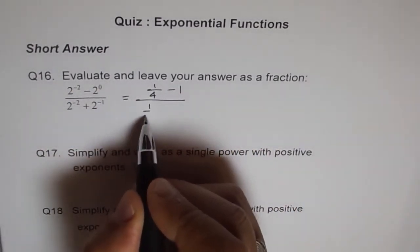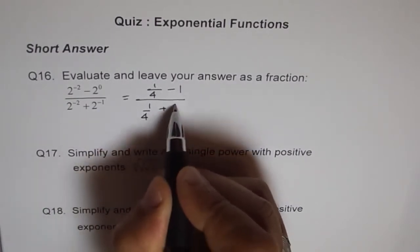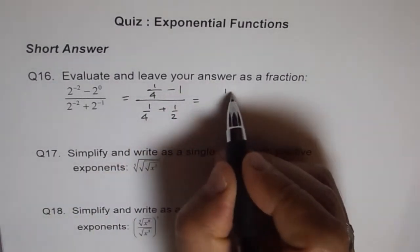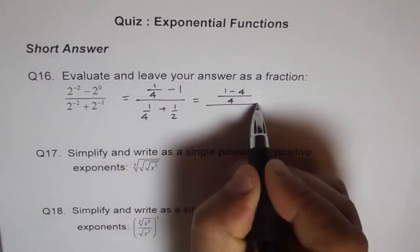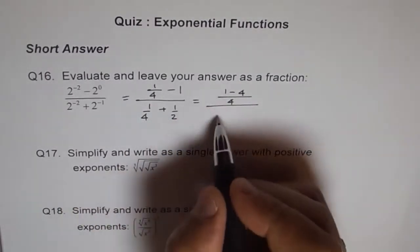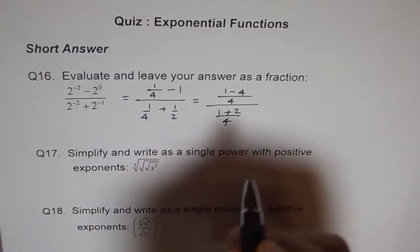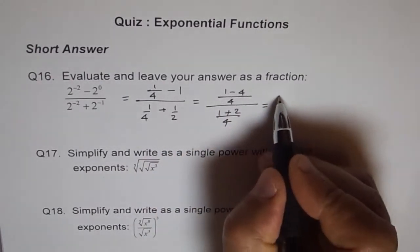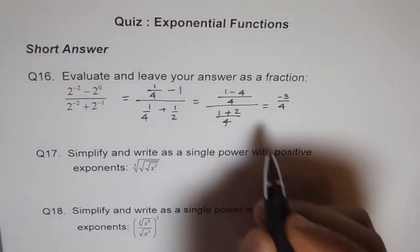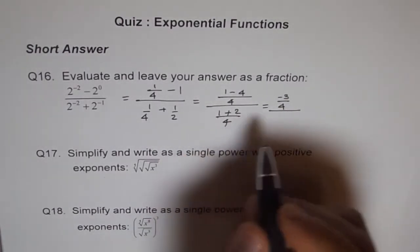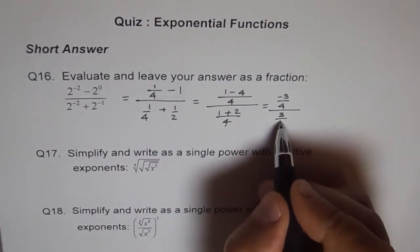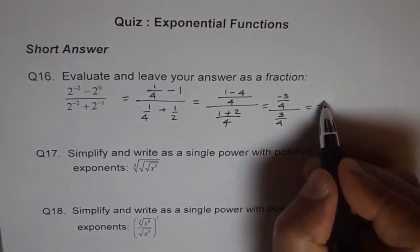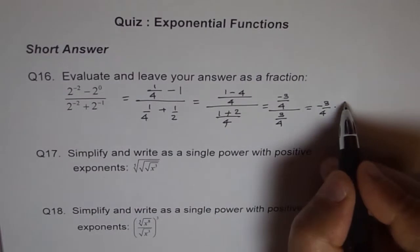So this is 1 over 4 plus 1 over 2 — that's 2 to the power of minus 1. We take 4 as a common denominator, so we get 1 minus 4 over 4, divided by 1 plus 2 over 4. This gives us 1 minus 4 equals minus 3, so the numerator is minus 3 over 4, and the denominator is 3 over 4.